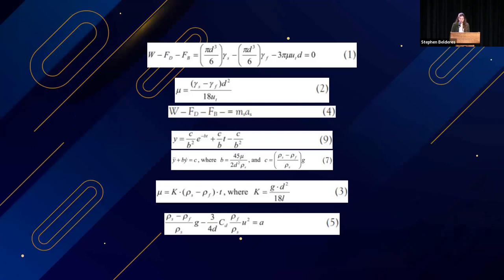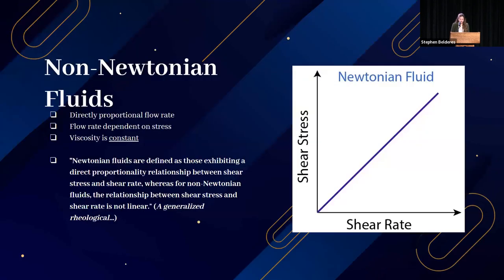A lot of my time was spent trying to learn what these equations mean. First, we need to define a non-Newtonian fluid. Newtonian fluids are defined as those having a direct proportionality relationship between shear stress and shear rate, whereas for non-Newtonian fluids the relationship between shear stress and shear rate is not linear. Essentially, Newtonian fluids flow faster when you push harder and slower when you push less. While their flow rate is dependent on stress, their viscosity is constant — it does not change. Non-Newtonian fluids are any fluid that does not follow these rules.